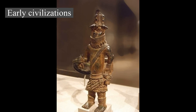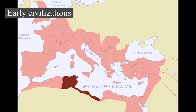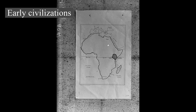Following the conquest of North Africa's Mediterranean coastline by the Roman Empire, the area was integrated economically and culturally into the Roman system. Roman settlement occurred in modern Tunisia and elsewhere along the coast. The first Roman emperor native to North Africa was Septimius Severus, born in Leptis Magna in present-day Libya; his mother was Italian-Roman and his father was Punic.